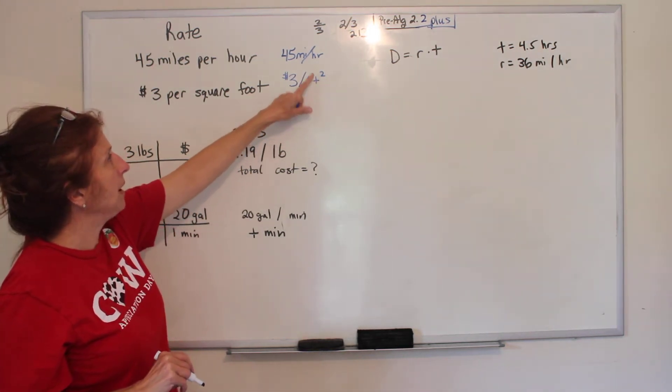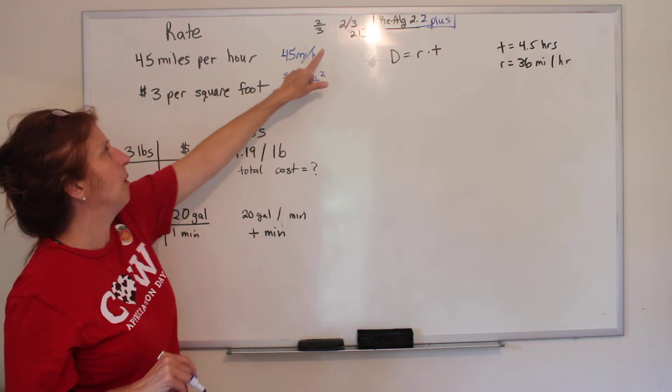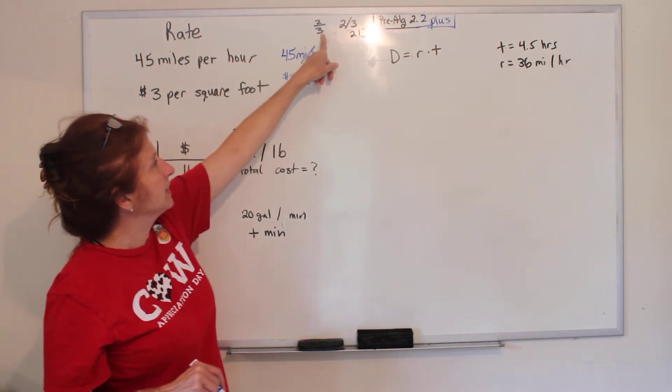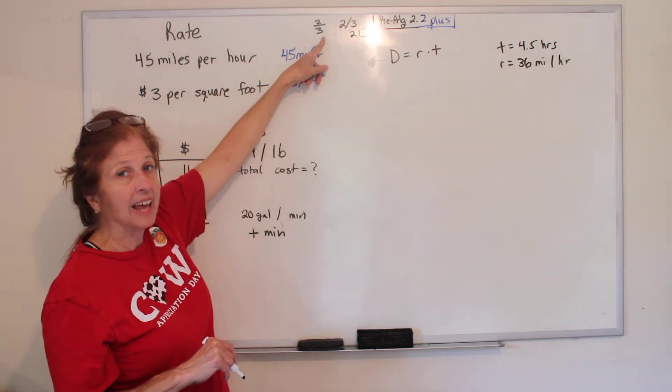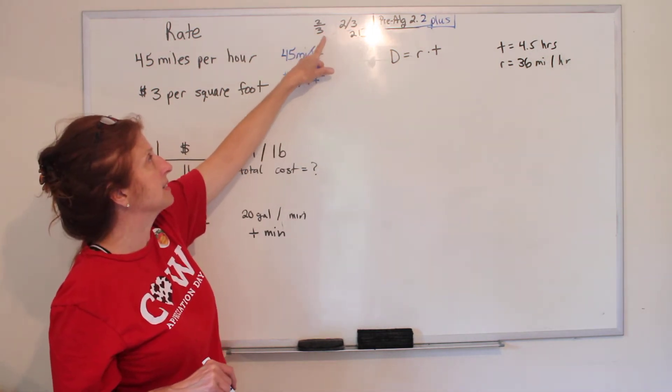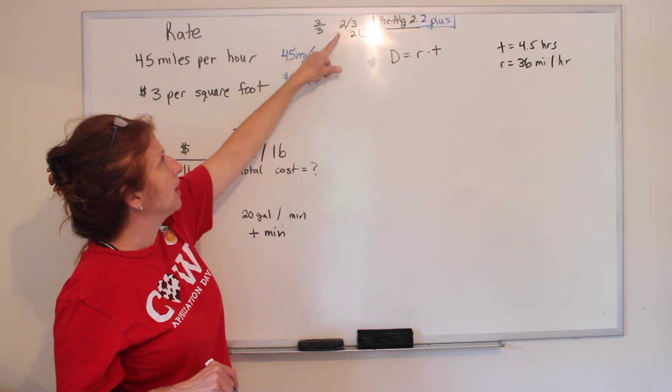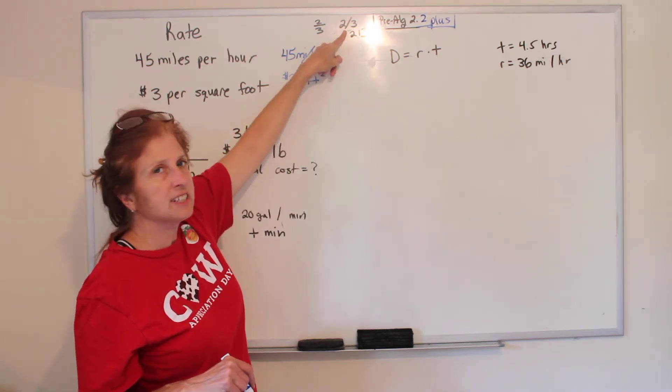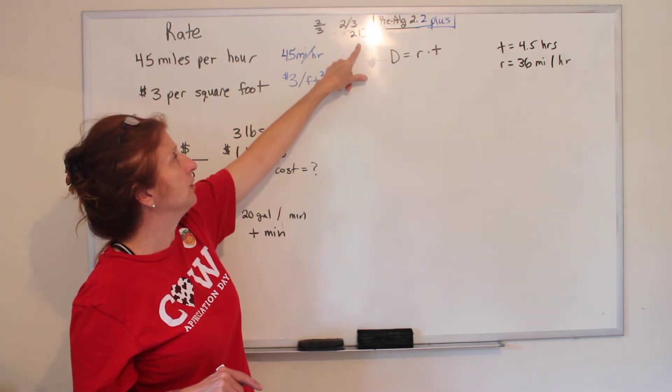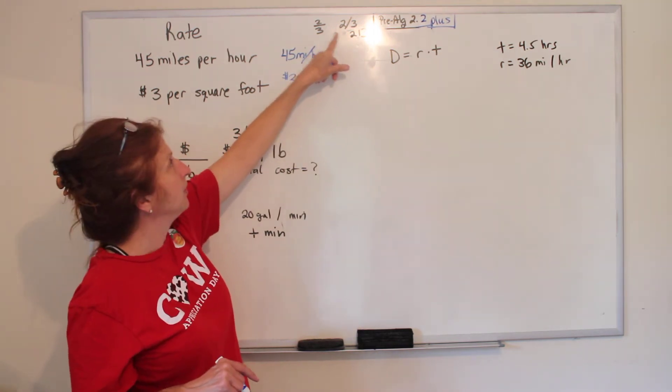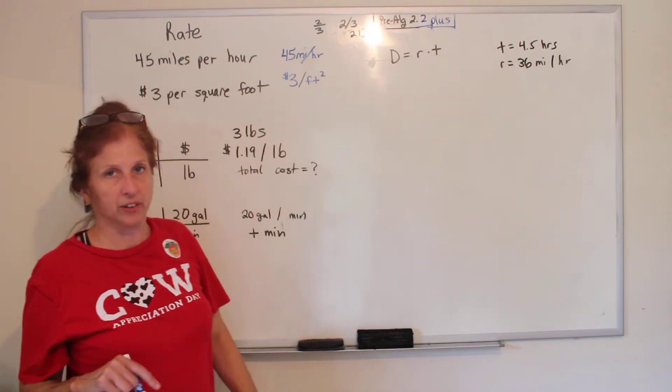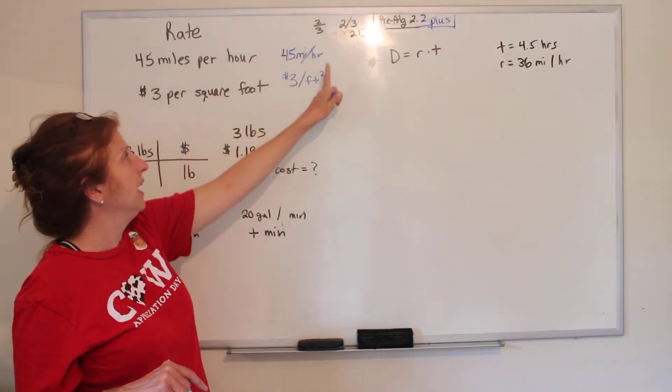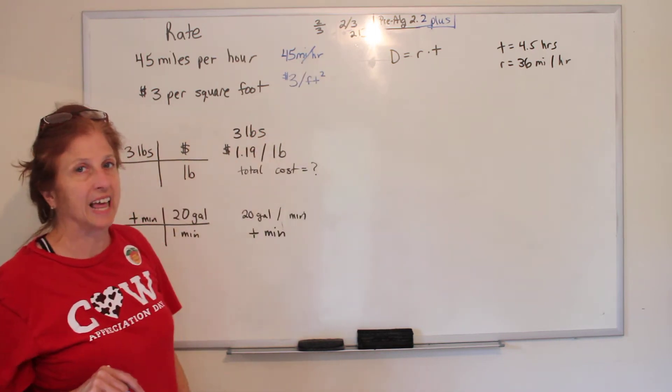Now you may write your fraction bar as a slash as long as it's in units. But if it's a fraction, I want a flat fraction bar like that. Because this is what happens. The students start writing it and it looks like this, and in just a skinny minute it turns into 213. And two thirds is gone and we've got 213 instead. So if it's numbers, I want flat fraction bars. If it's a rate, you can do a slash if you want.